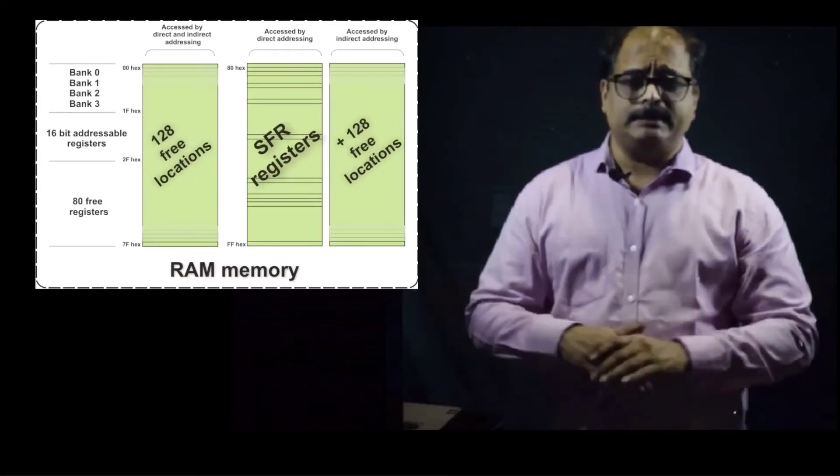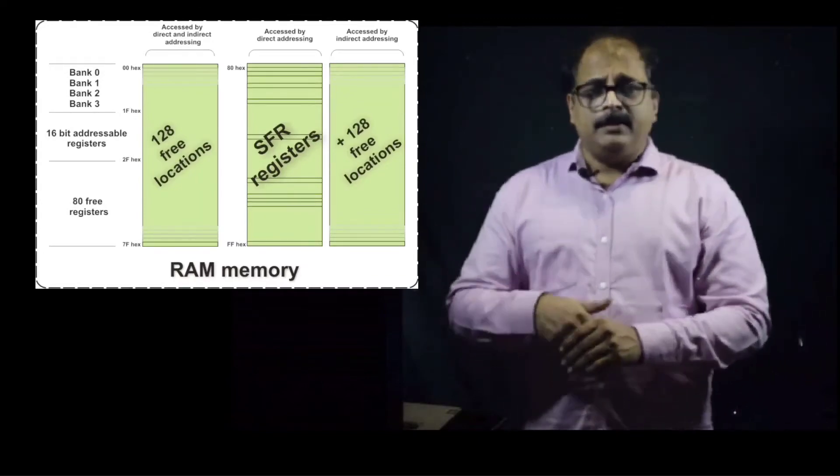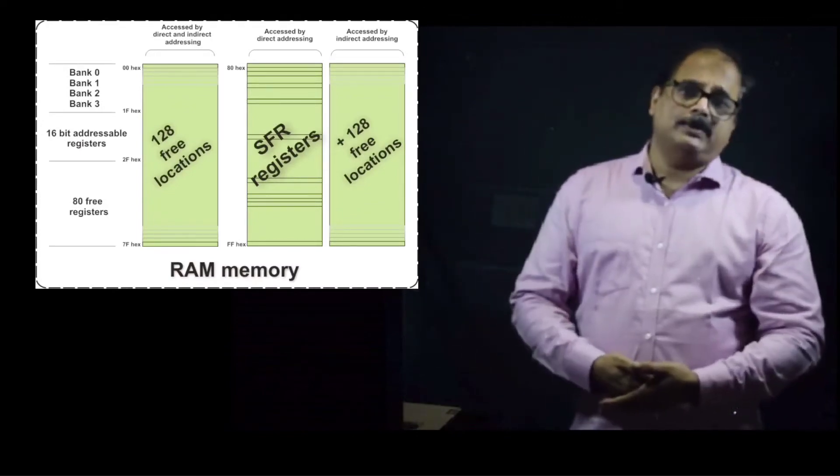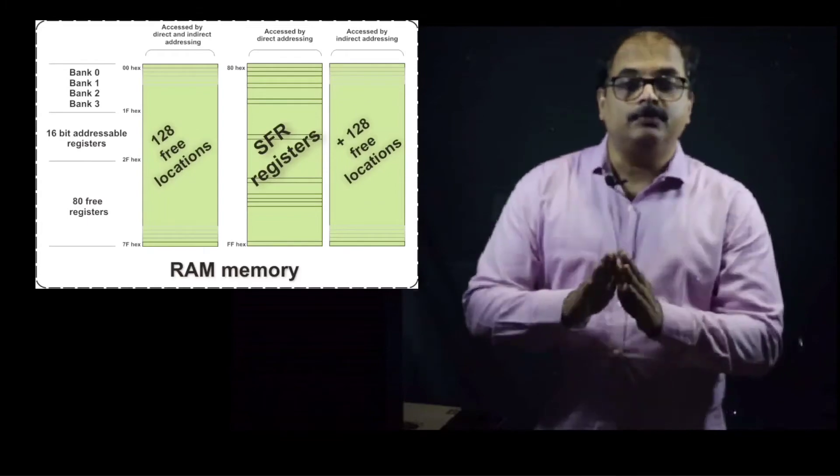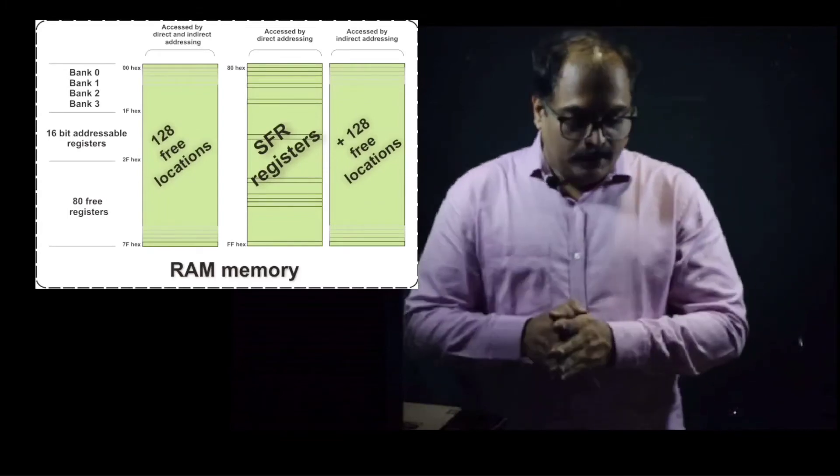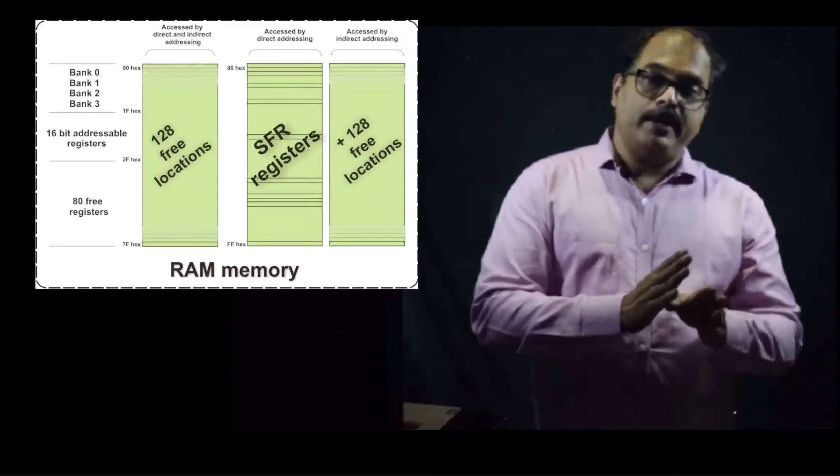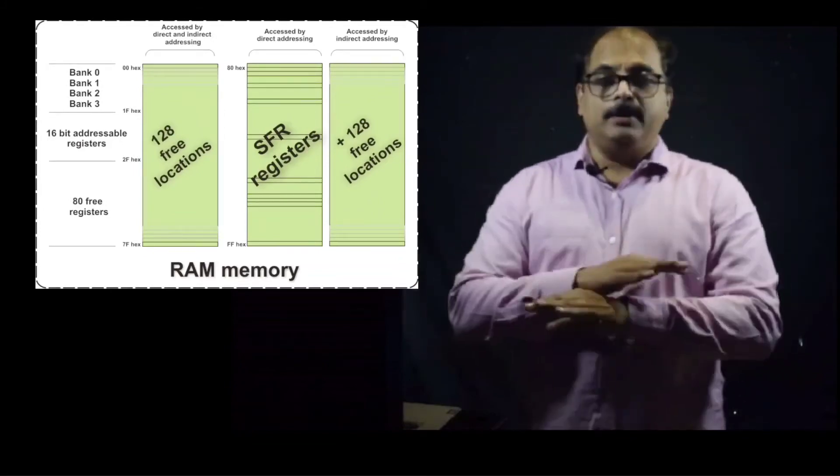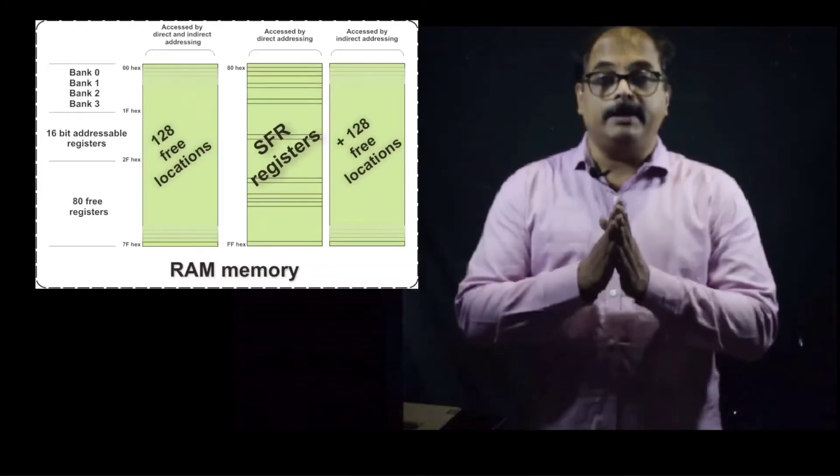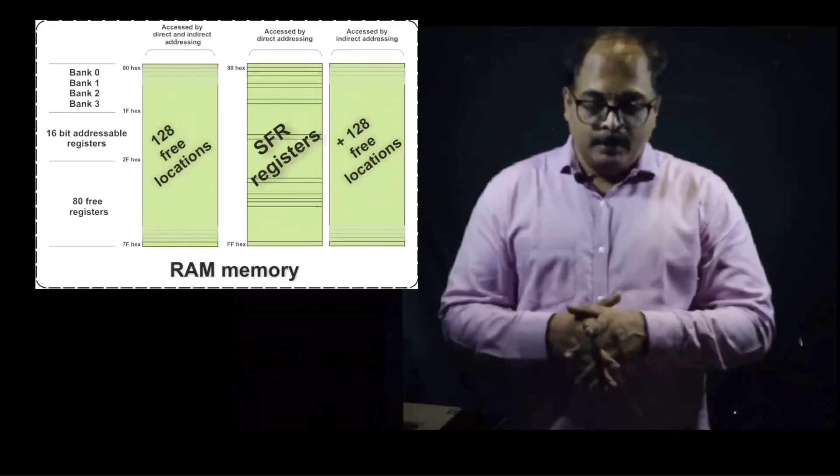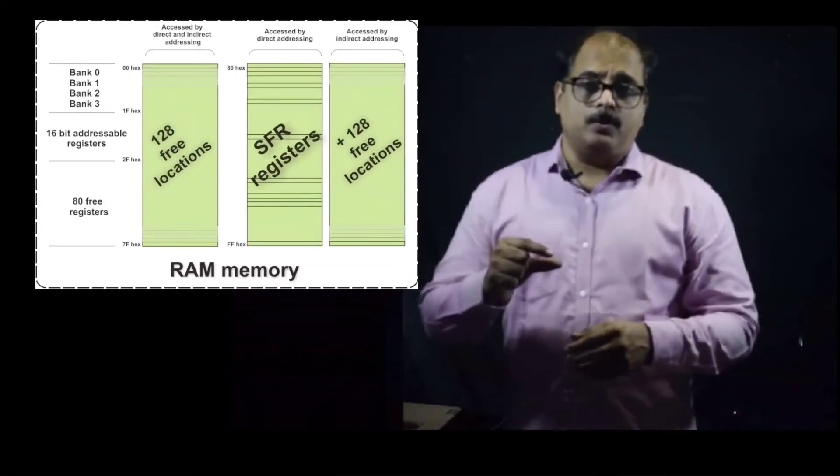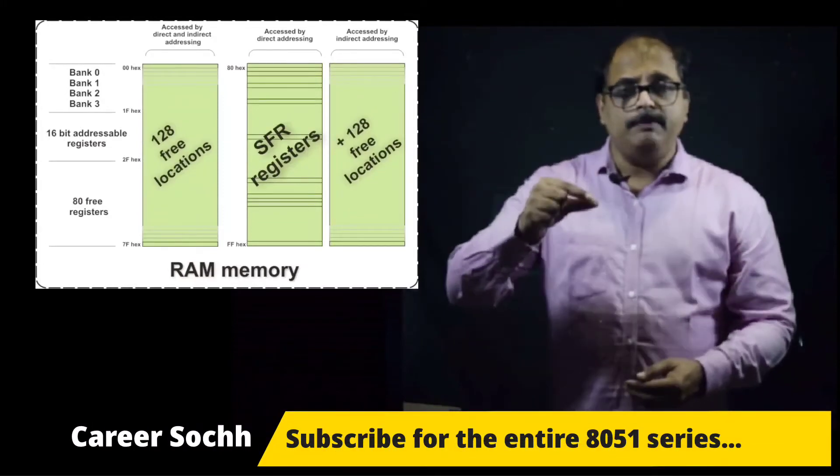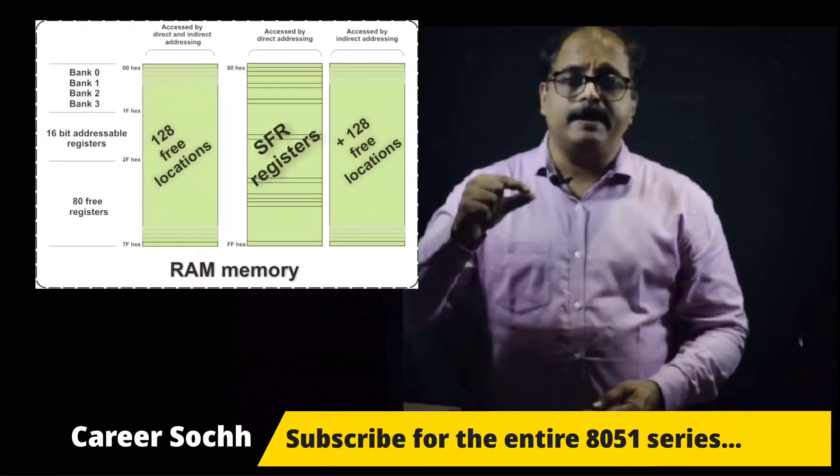For the time being, just remember that further 128 bytes of RAM is reserved for special function registers. Obviously all these 128 bytes are not used as SFRs, there are some bytes which are not at all used as SFR. You can use them as general purpose memory, but you have to mention that this further 128 bytes of RAM is reserved for SFRs. So 128 plus 128, total 256 bytes of RAM you will find in all the model variants of 8051 microcontroller. In some microcontrollers you will further get 128 bytes which can only be addressed by indirect addressing mode.